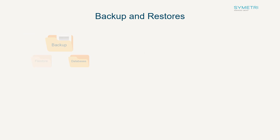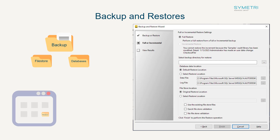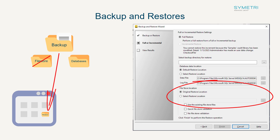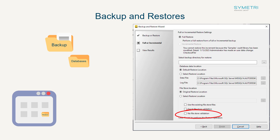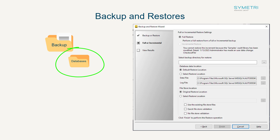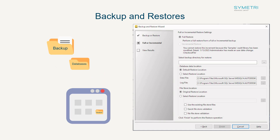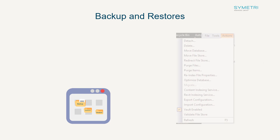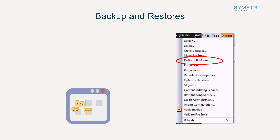When restoring a backup, you can now point to a different file store location — for example, an existing file store on the machine. If you are looking to skip file store validation for a migration purpose to save time on upgrade, you can now choose to have no file store validation, meaning you are only migrating the databases that need to be upgraded. Once on the new server, you can redirect the file store to the correct location by going to Actions and choosing Redirect. Note that redirecting will not delete the original file store.